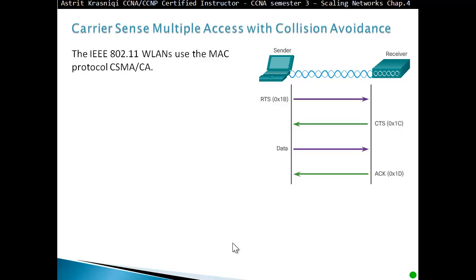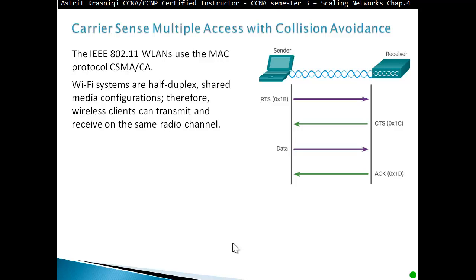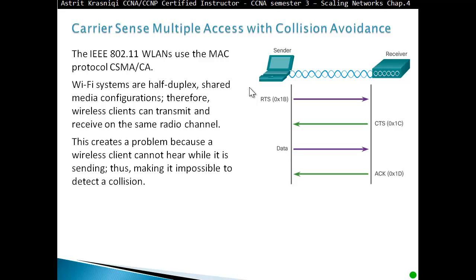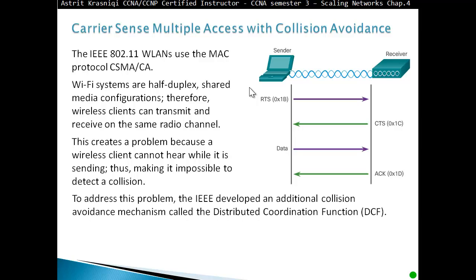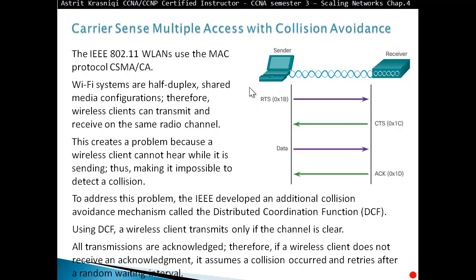Carrier sense multiple access with collision avoidance: 802.11 WLAN uses the MAC protocol CSMA/CA. Wi-Fi systems are half duplex shared media configuration. Wireless clients can transmit and receive on the same radio channel using half duplex. This creates a problem because the wireless client cannot hear while it's sending, making it impossible to detect collision. To address this, IEEE developed an additional collision avoidance mechanism called the distribution coordination function (DCF). Using DCF, a wireless client transmits only if the channel is clear. All transmissions are acknowledged. If a wireless client does not receive an acknowledgement, it assumes a collision occurred and retries after a random waiting interval.